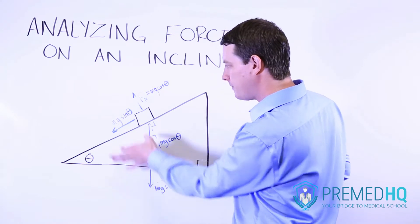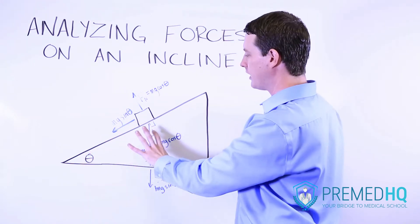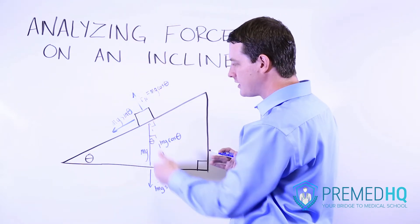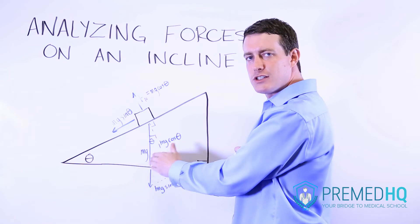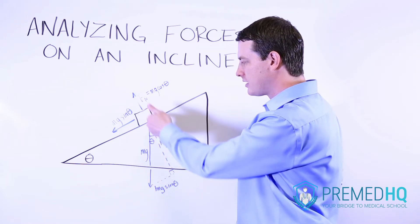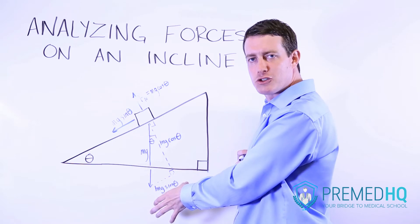So this component is the downward slope there. This component is the normal force. And you can assemble this triangle very simply by drawing the gravitational force vector, drawing something that is perpendicular to the slope, and then creating a right triangle out of that.